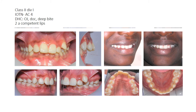Here there is a Class 2, Division 1 malocclusion. The IOTN index aesthetic score is 4. For the dental health component, there are three things present: overjet, displacement of contact, and a deep bite. But since overjet comes first on the list, we classify it as 2A because the overjet is between 3 to 6 millimeters with a competent lip.